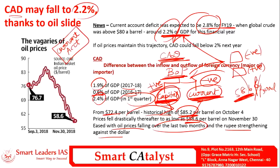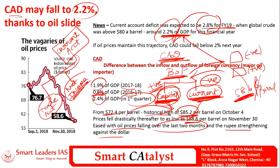The current account of any country consists of three components: one is the trade component or trade account, which deals with trade activities carried out between a country and other countries; the second component is net income factor; and the third major component is transfer payments.